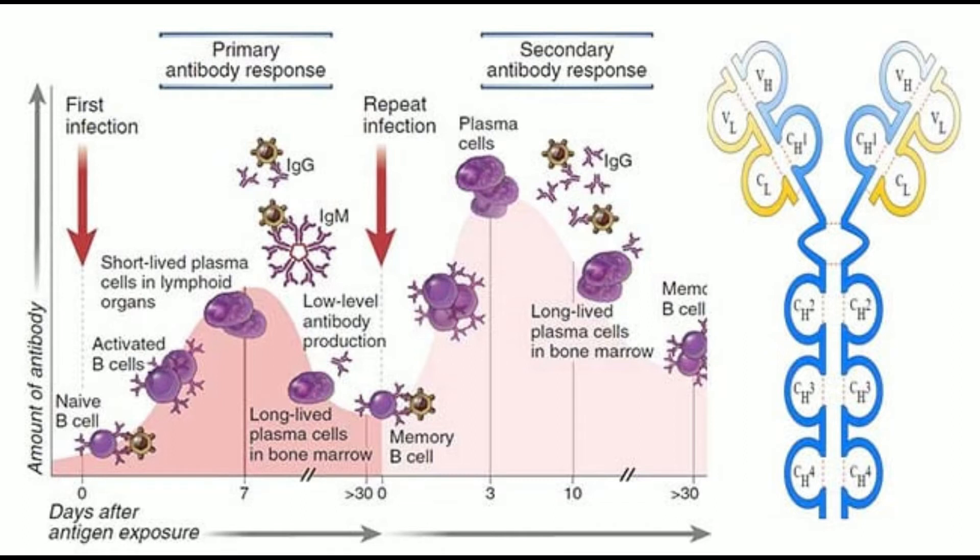Characteristic #7 - Antibodies: Both thymus-dependent and thymus-independent antibodies are involved in the primary immune response. Only thymus-dependent antibodies are involved in the secondary immune response.